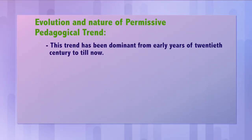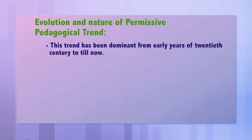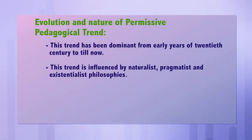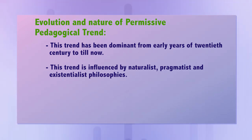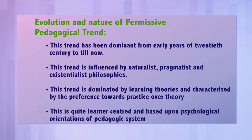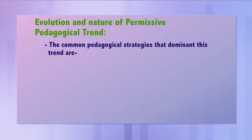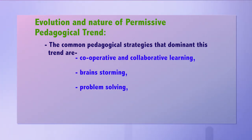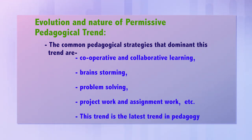The other trend is the permissive pedagogical trend, which has been dominant from the early years of the 20th century to the present. This trend is influenced by naturalist, pragmatist and existentialist philosophies. It is dominated by learning theories and characterized by preference towards practice over theory. It is quite learner-centered and based on psychological orientation of the pedagogic system. The common pedagogical strategies dominating this trend are cooperative and collaborative learning, brainstorming, problem solving, project work and assignment, etc. This trend is the latest trend in pedagogy. Both trends have dominance over theory and practice of education as per the demand of the time and situation of the pedagogic system.